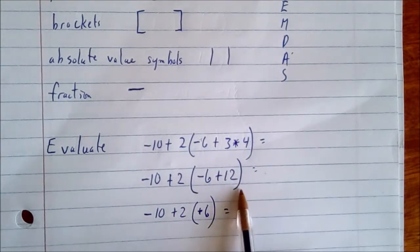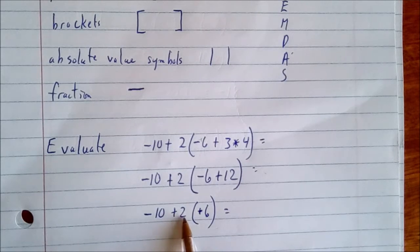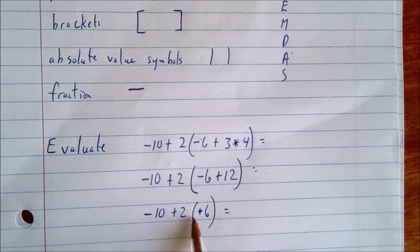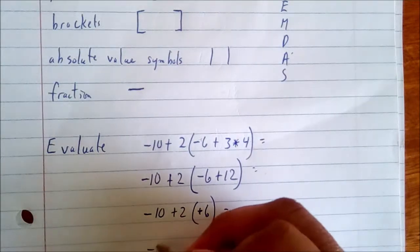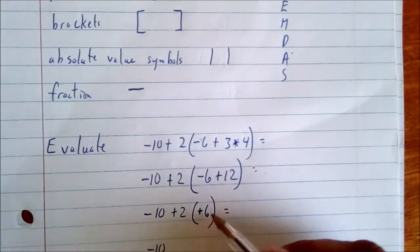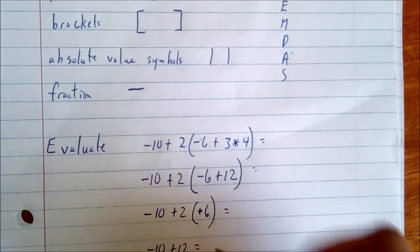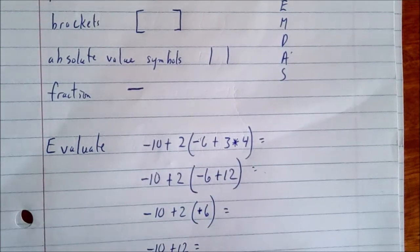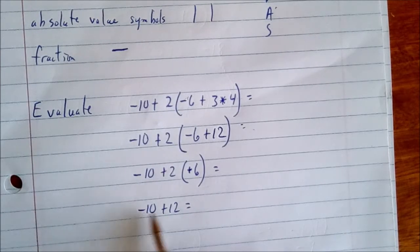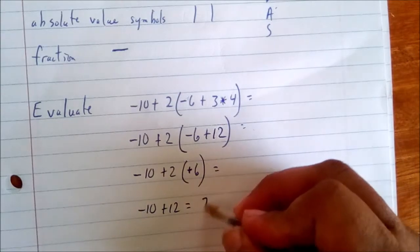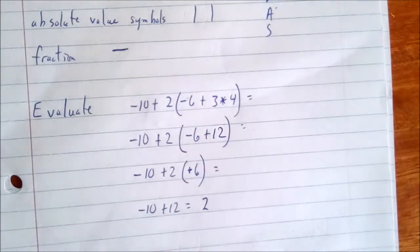Now we got rid of the bracket contents. We have a number next to a bracket, which means multiplication. So bring down the negative 10 and say 2 times 6, which gives us 12. Now we perform the addition: negative 10 plus 12 gives us 2, keeping the sign of the largest absolute value.